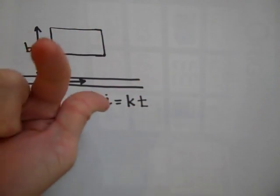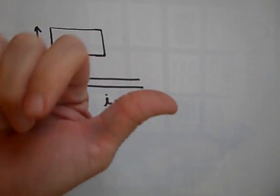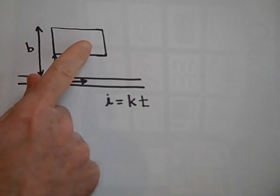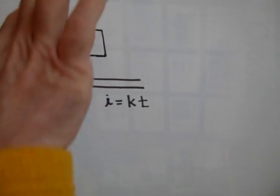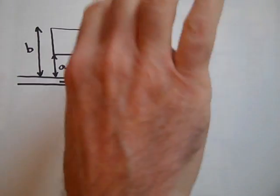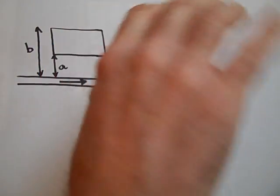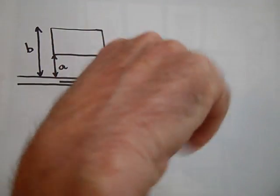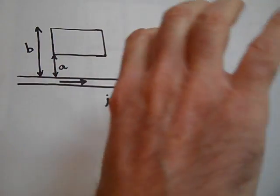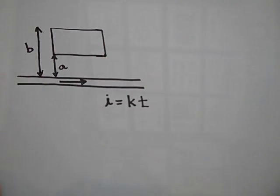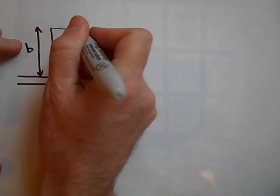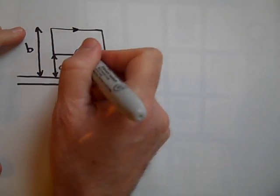Since the current is coming out at us on this side, it's going to try and make X's. To make X's, it's going to rotate this way — so it's going to go like that.